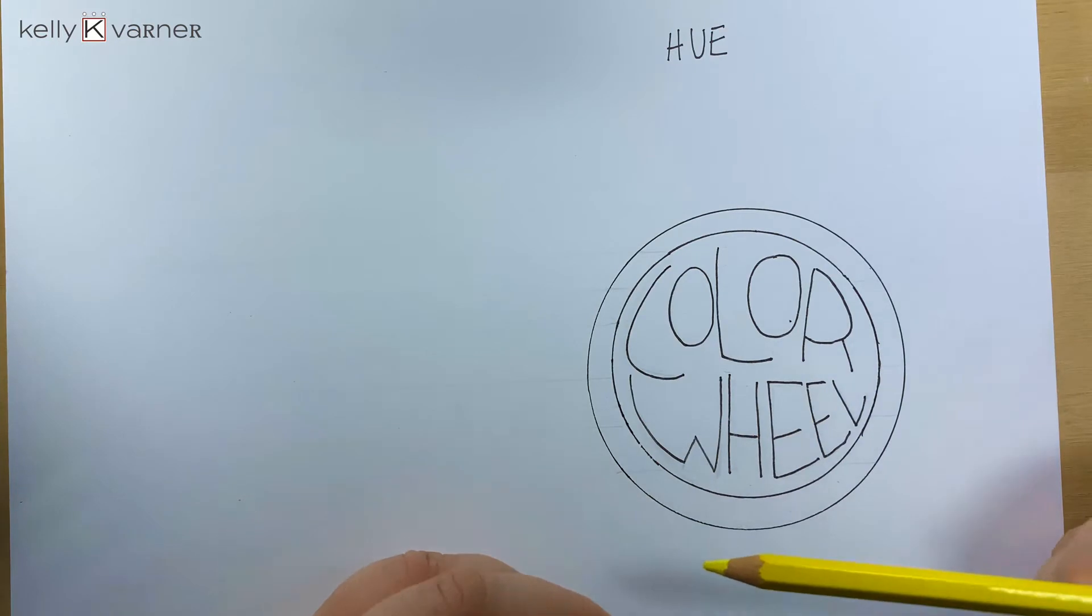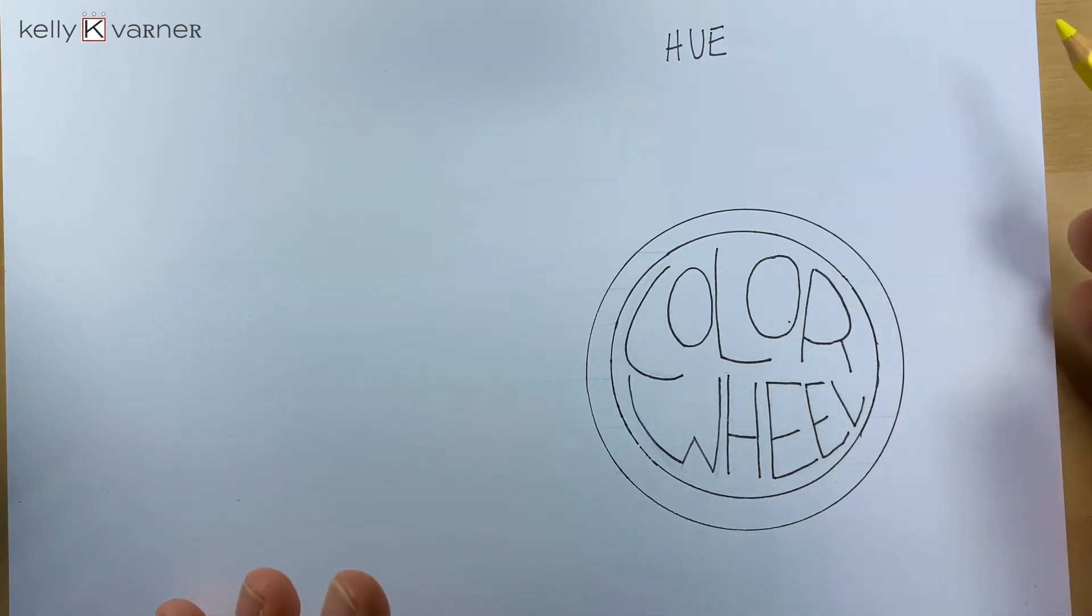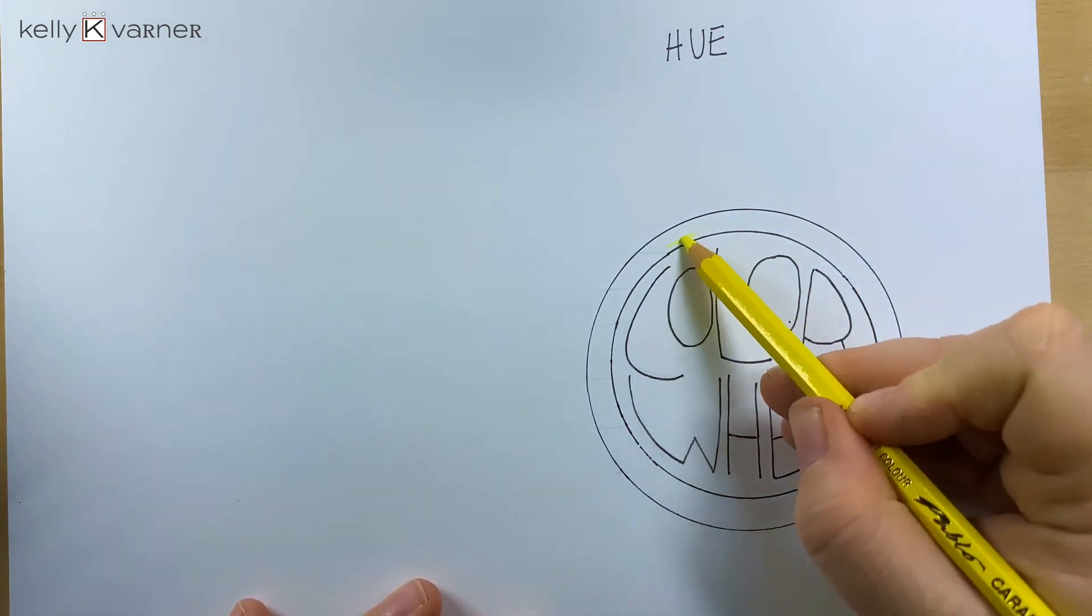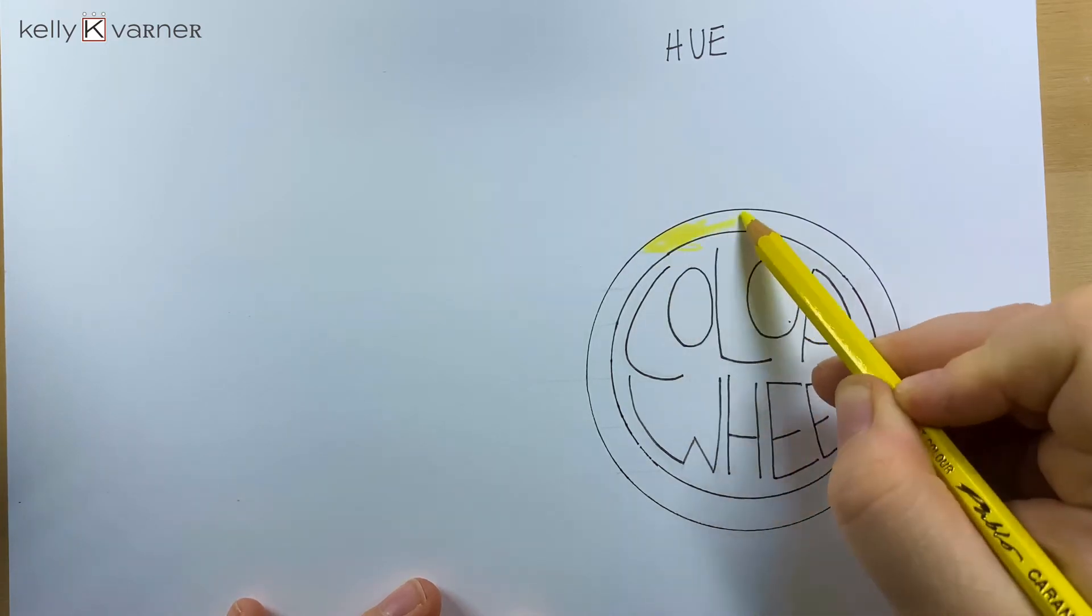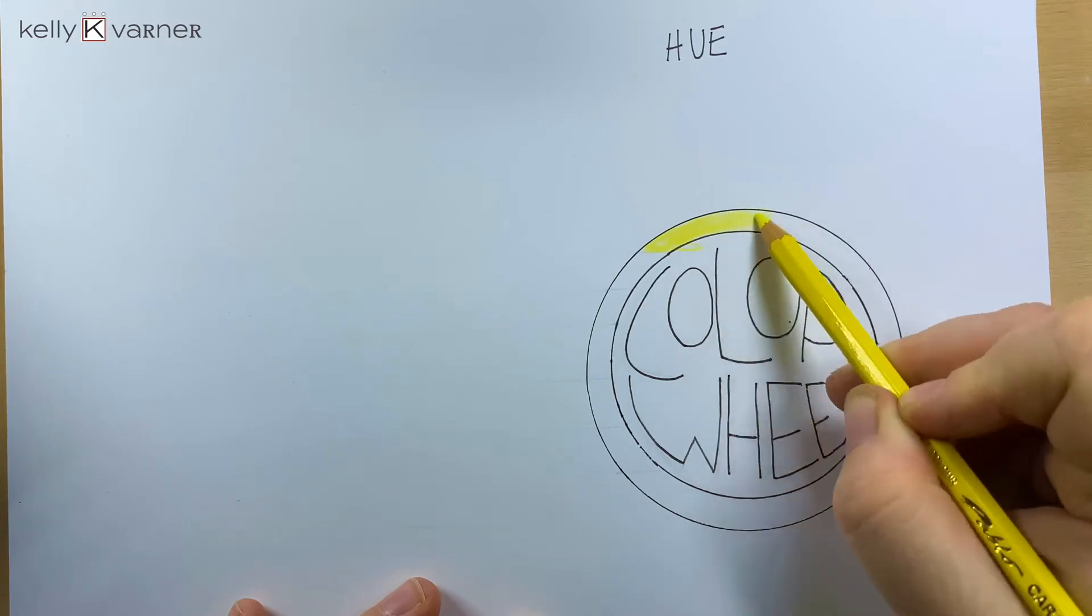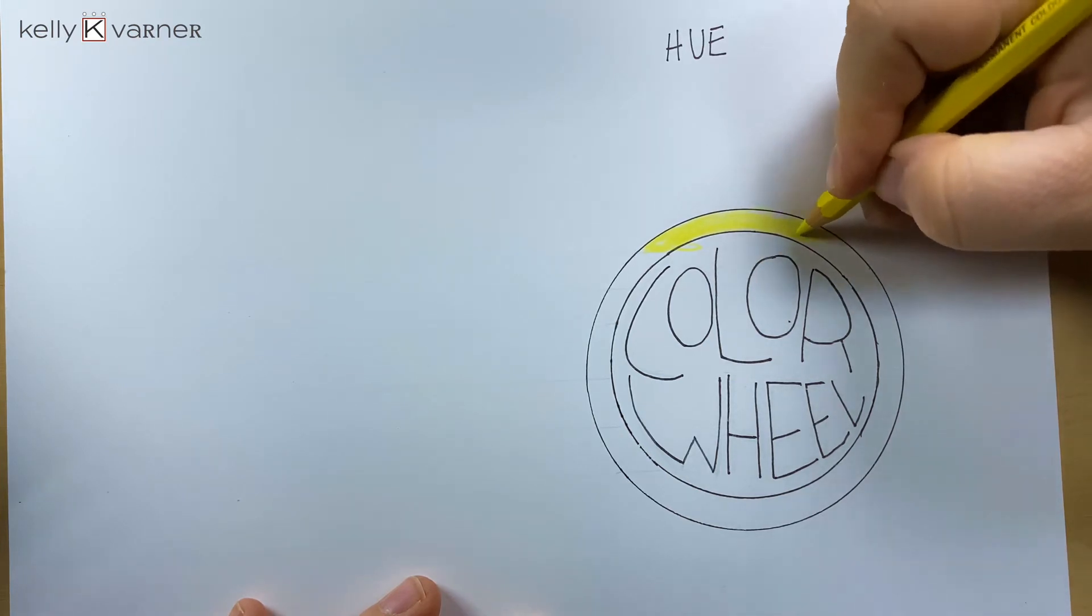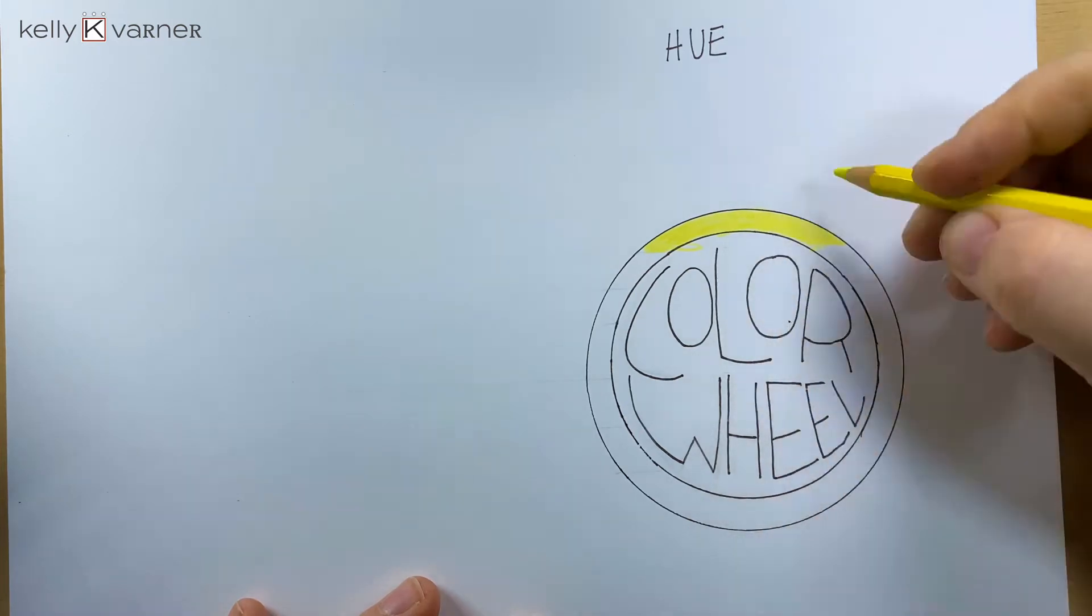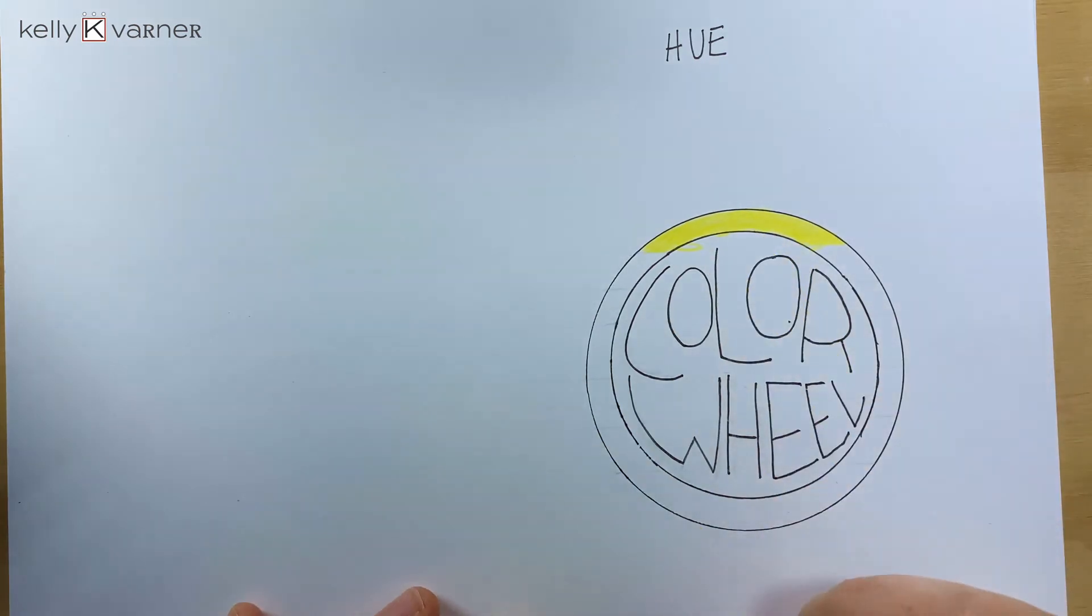Now this color wheel is going to be in a very specific way that I'm going to need you to know how to work. We're going to start with the top of the color wheel, which is going to be yellow. This is going to be one of our lightest colors on the color wheel, so you can use yellows in your palette instead of just a bright white or the color of your canvas.